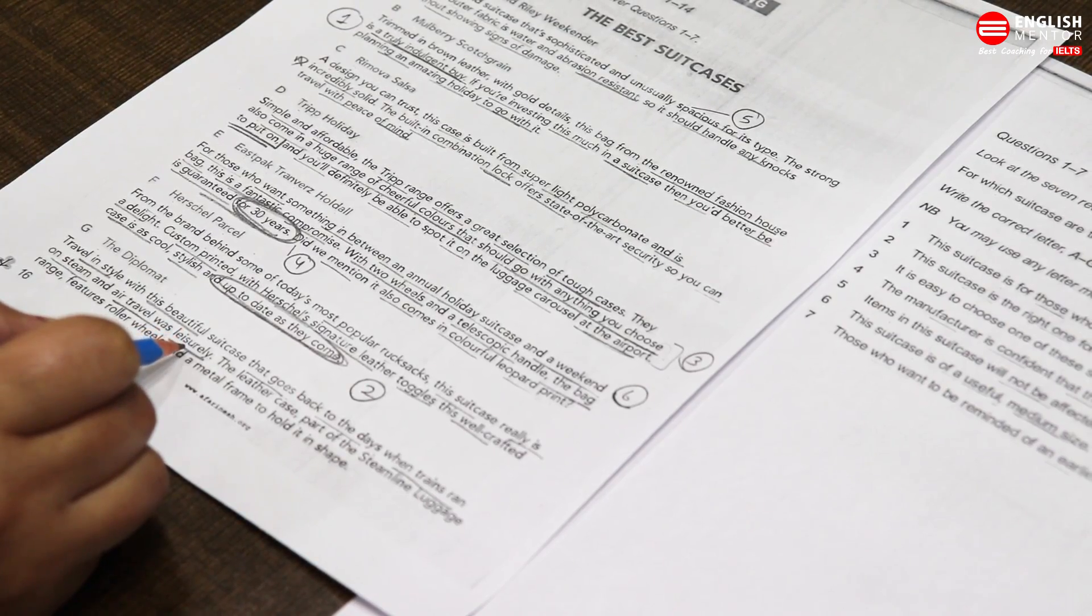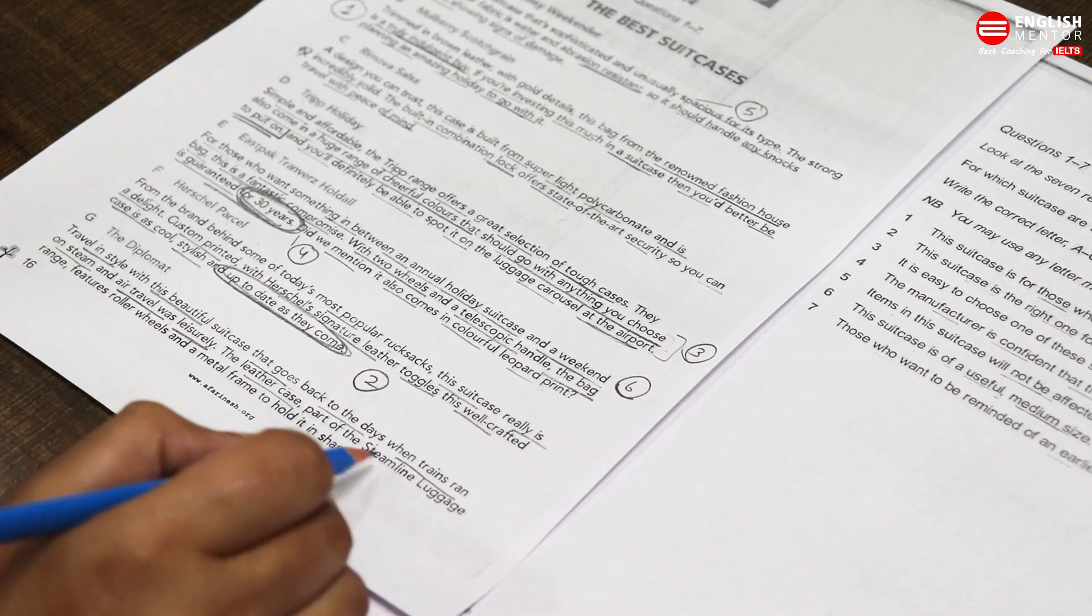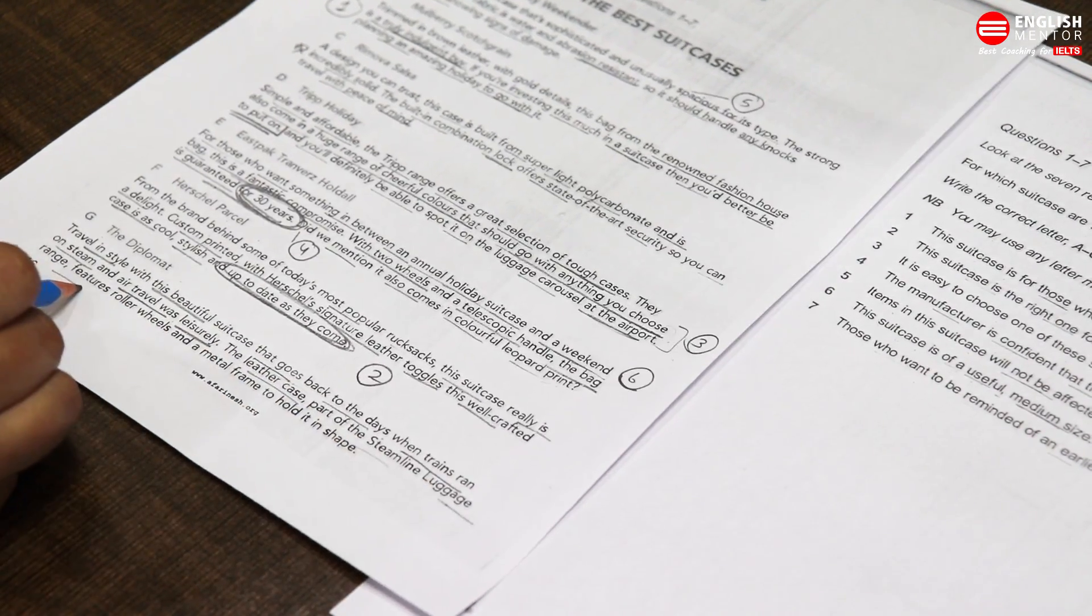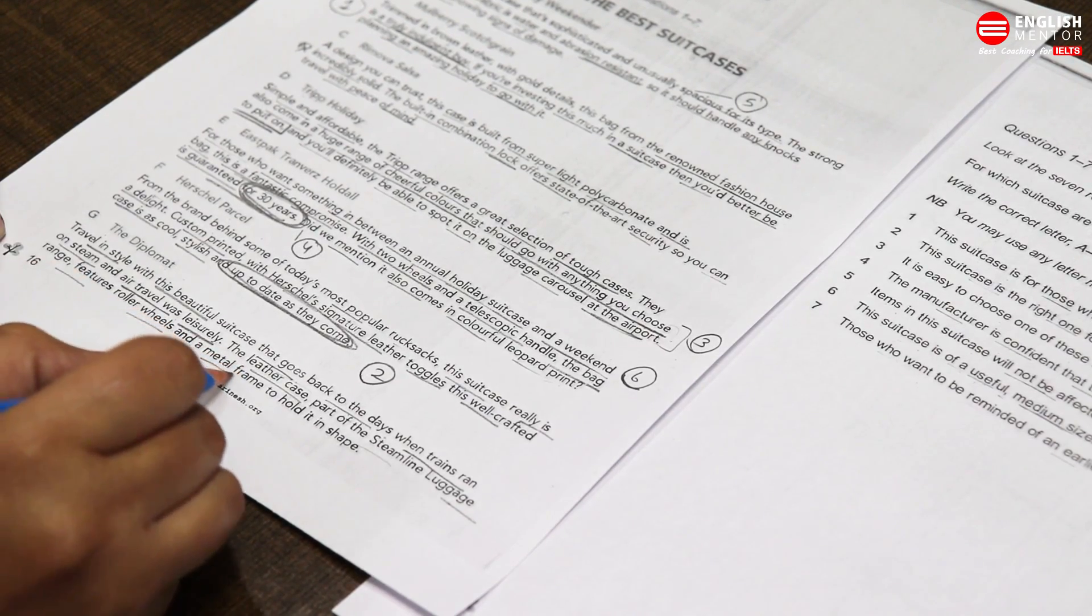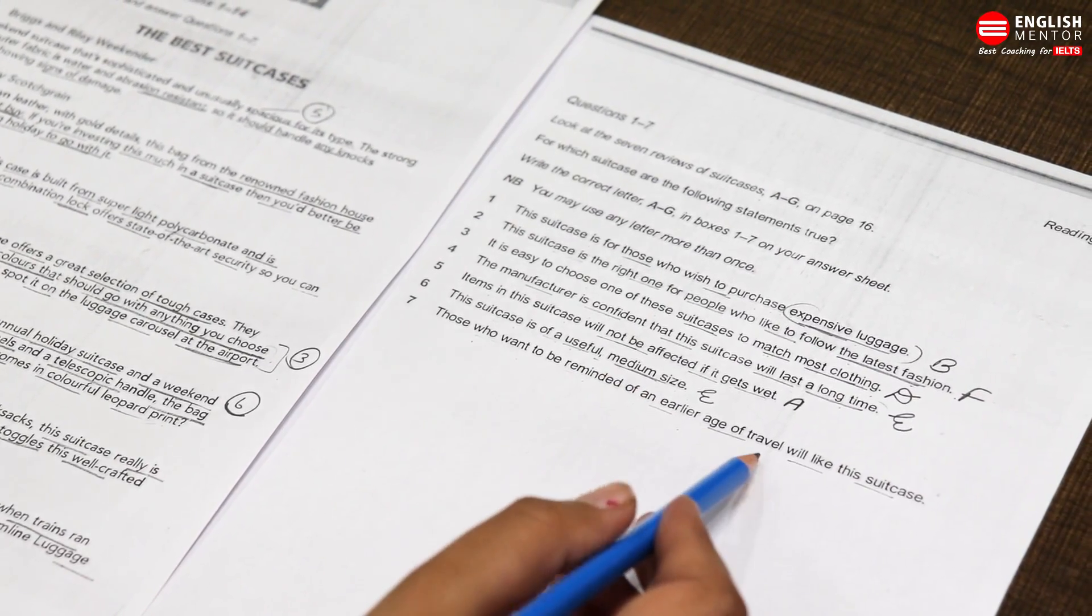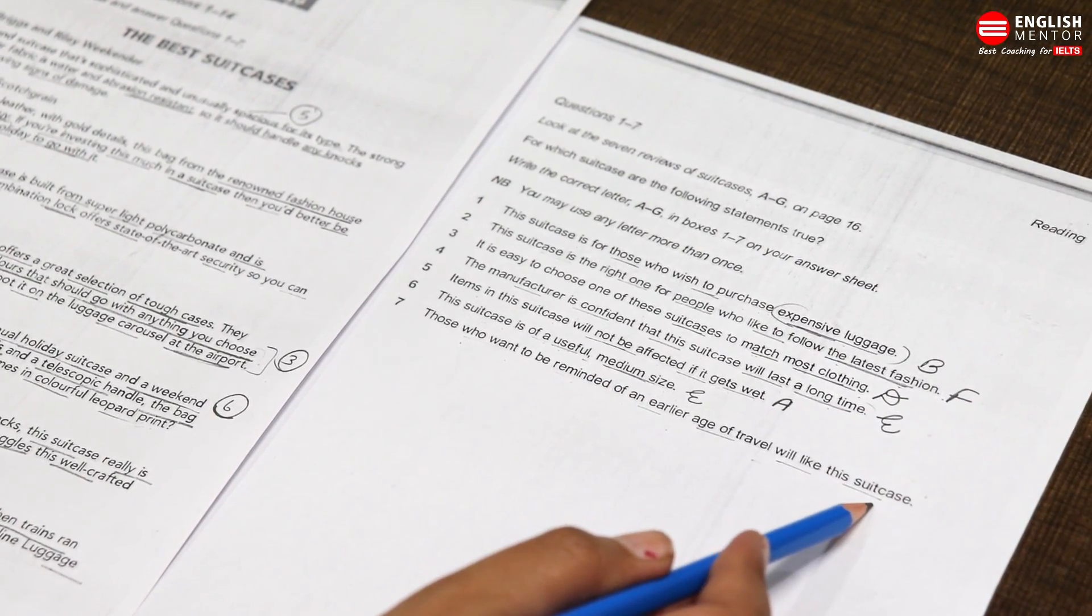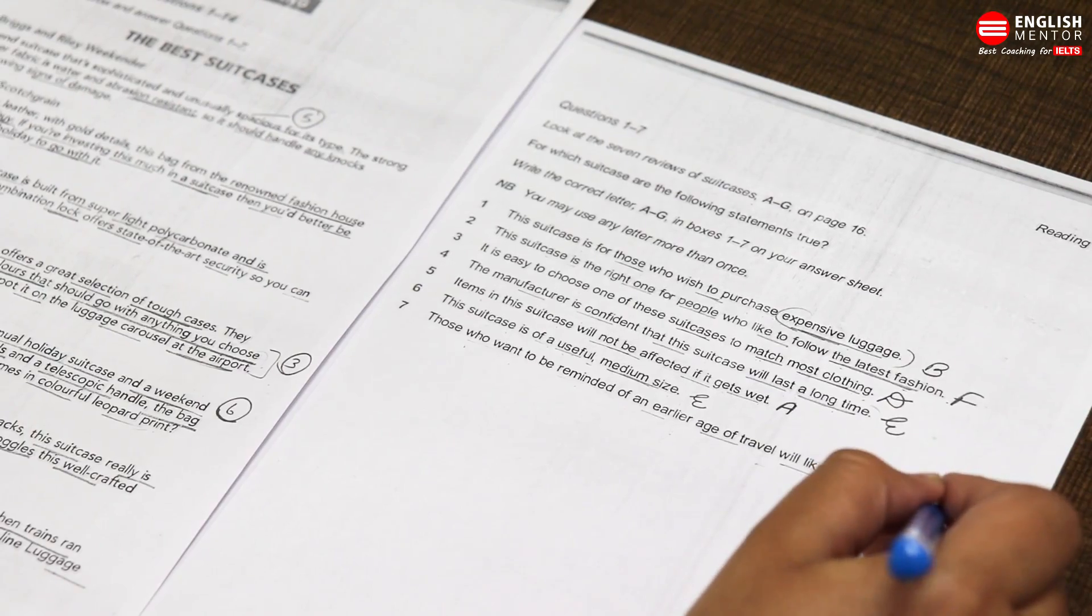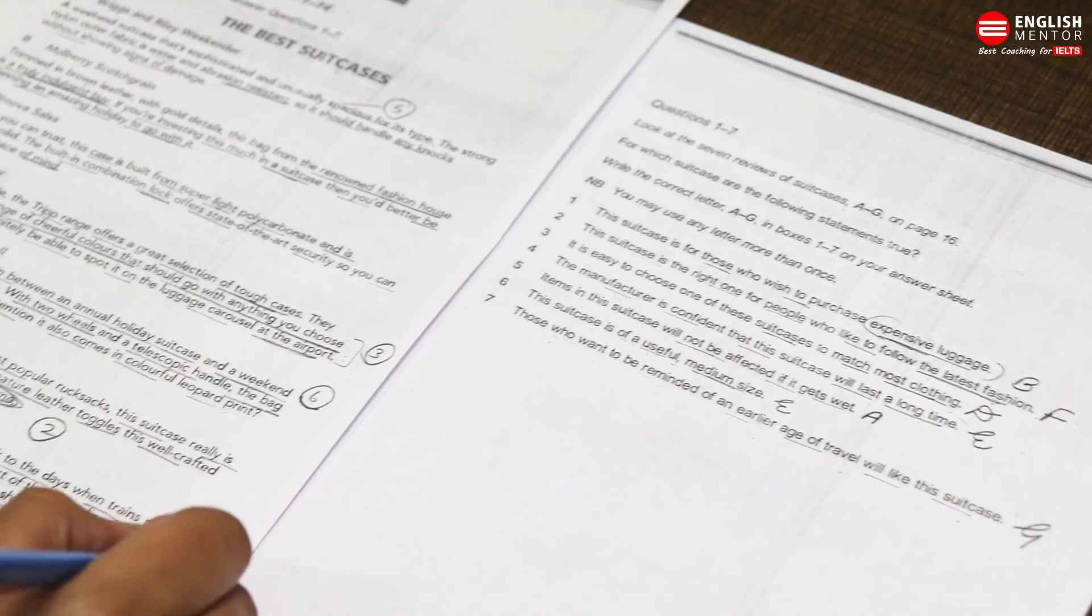The leather case, part of the Streamline luggage range, features roller wheels and a metal frame to hold it in shape. For those who want to be reminded of an earlier age of travel will like this suitcase. The answer for question seven is solved. I hope you like this reading method and you will try to solve your reading in the same way.